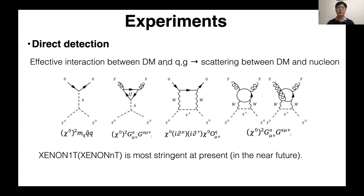In direct detection, direct detection observes the scattering between dark matter and nucleon. This scattering can be described by effective interaction between dark matter and quarks. These diagrams induce the leading contribution. However, when the coupling constant of this vertex, lambda_chi_h, is suppressed, these two diagrams become important and these diagrams induce these two operators.